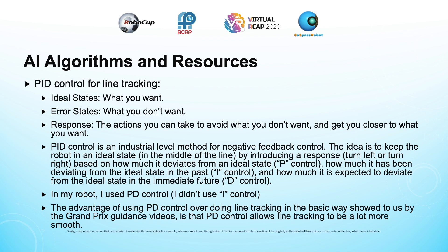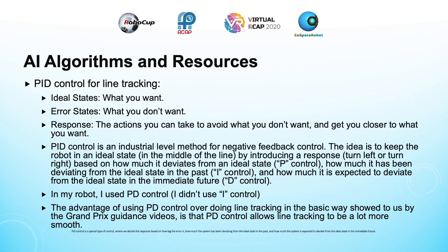A response is an action that can be taken to minimize the error states. For example, when our robot is on the right side of the line, we want to take the action of turning left, so the robot will travel closer to the center of the line, which is our ideal state. The general idea of a control system is to introduce a response at the right time to achieve the ideal states and to avoid the error states. PID control is one special type of control system whereby we decide the response based on how big the error is, which is called P control.